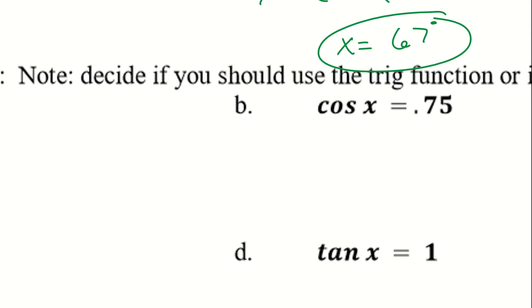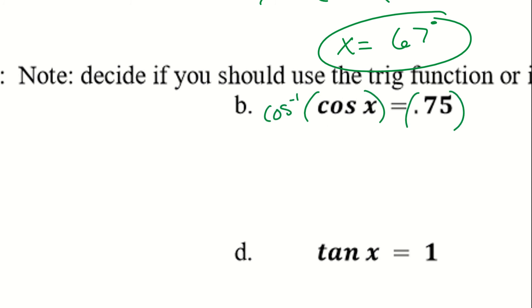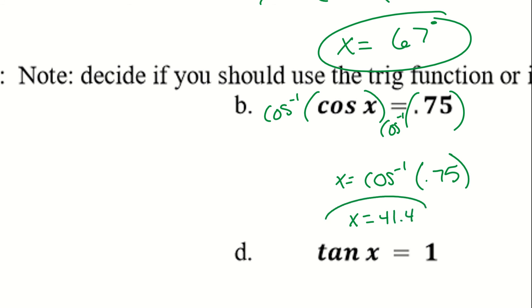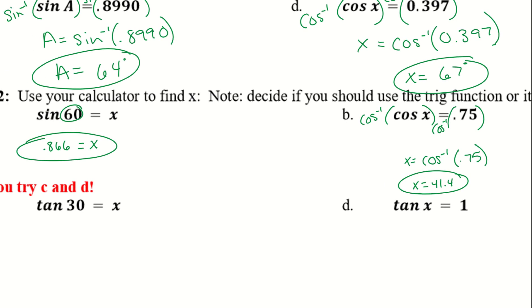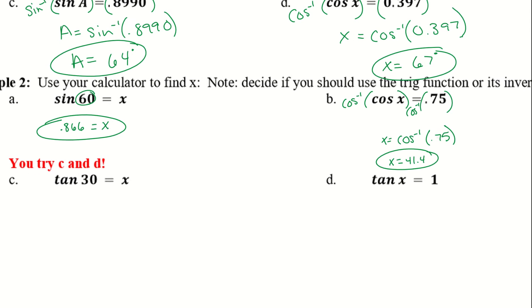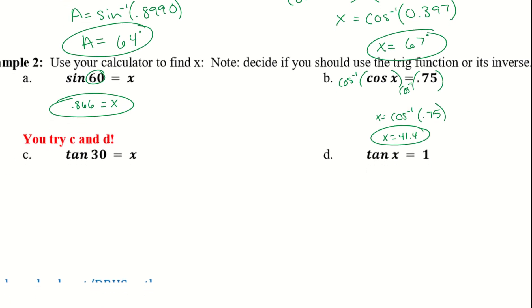Example 2b: we have cosine of x equals 0.75. If I tried to plug cosine of x into a calculator I wouldn't be able to, because I have a variable there. So I use the inverse trig function: x equals inverse cosine of 0.75. Plug that in — second, cosine to the negative 1, times 0.75 — and x equals 41.4. When deciding whether to use the inverse or not: if you don't know what your angle is, that's when you use the inverse. Go ahead and try c and d — pause the video and the solution will be there when you unpause.